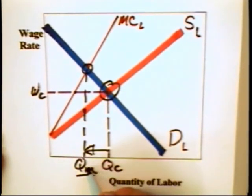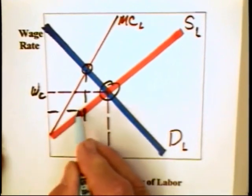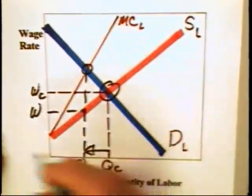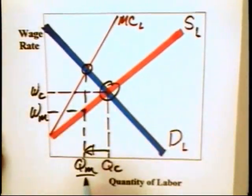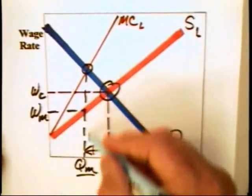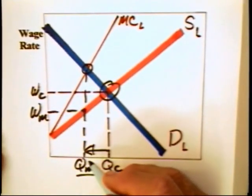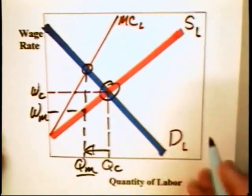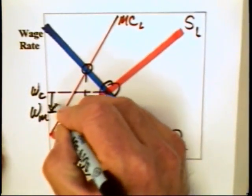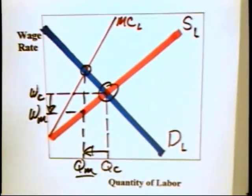With an employment level QM, there will be workers willing to work for WM, or to put it another way, at a wage of WM, QM workers will come on to the market. This means that a monopsony can, in fact, will in fact, tend to pay a lower wage than the competitive labor market.